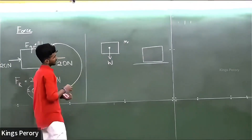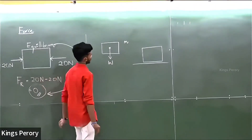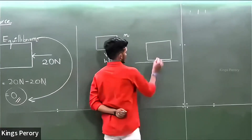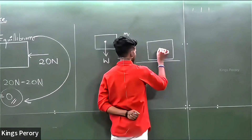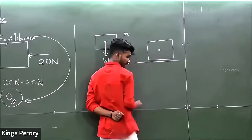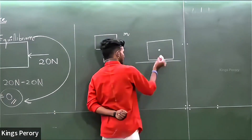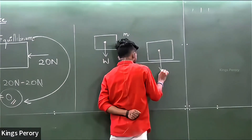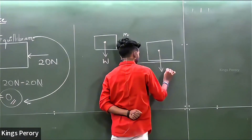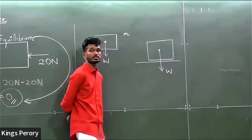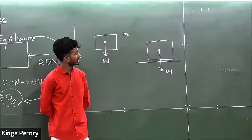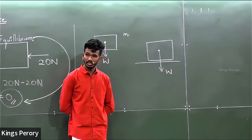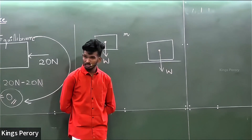What are the forces acting on this box? The box will have a mass, and due to the mass it will have weight. Weight will act from the center of gravity downwards — that is the weight. Is that the only force?